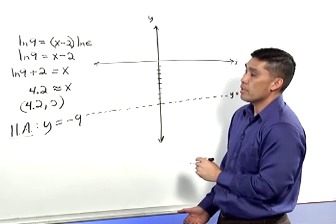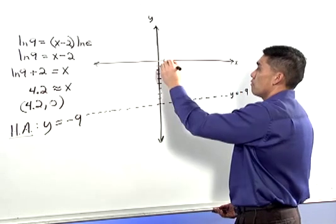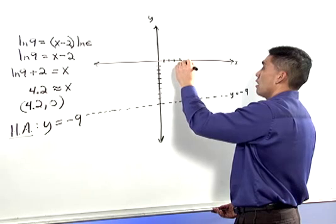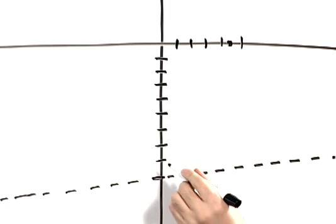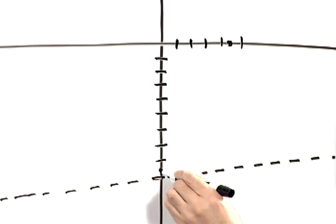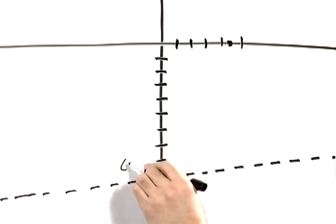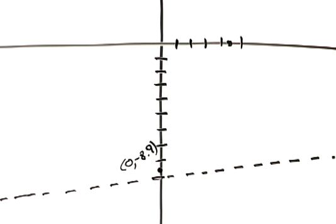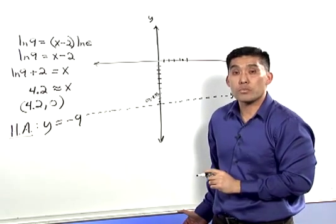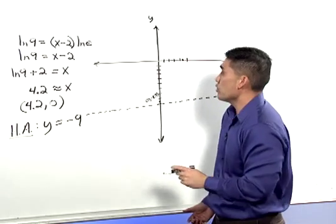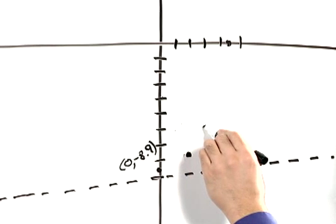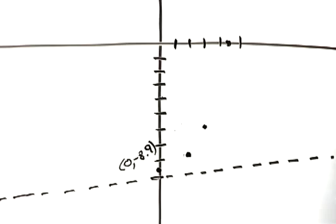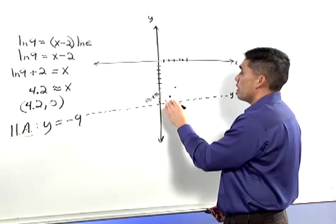The first point, the x-intercept, 4.2 comma 0. The next is the y-intercept, 0 comma negative 8.9, pretty close to that asymptote. And then finally those three shifted points: 2 comma negative 8, 3 comma negative 6.3, and finally 1 comma negative 8.6.